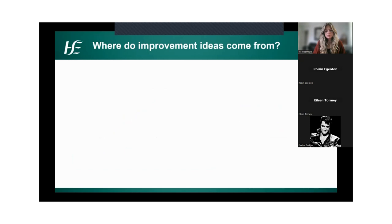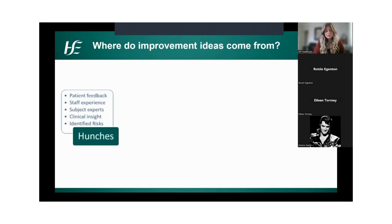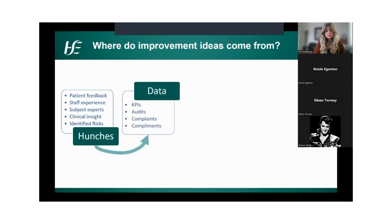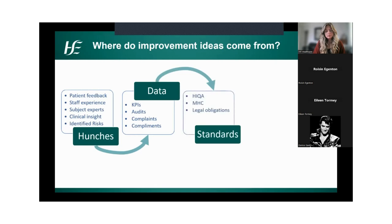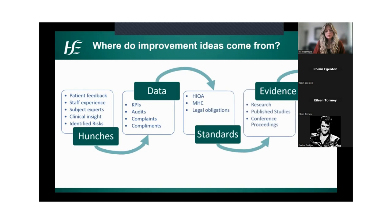Where do we get improvement ideas from? Some of the more popular sources are: hunches; patient, family, and carer feedback; staff experience; subject matter experts; and identified risks or issues in the service. Clear data — KPIs, audits, complaints, compliments — can give you great ideas for change. Your standards, such as HIQA standards and legal obligations, are another source. Looking at research, published studies, and conference proceedings, and considering ideas from a different perspective or through a different lens, can always lead to a new approach.